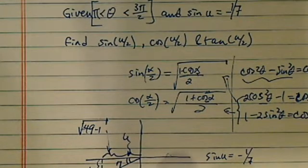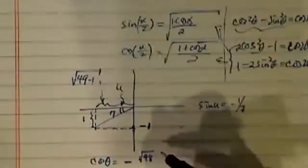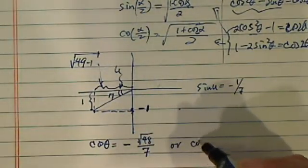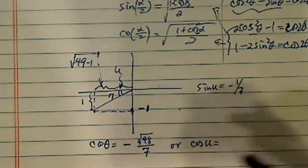So it equals the square root of 48 over 7. Or if you want to simplify it, cosine of u...